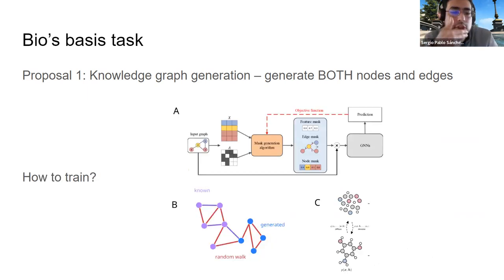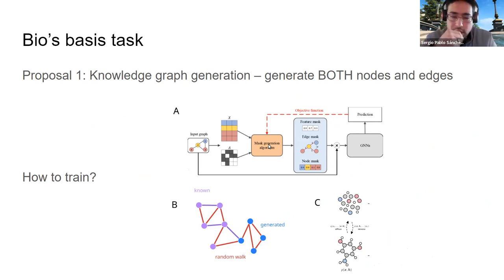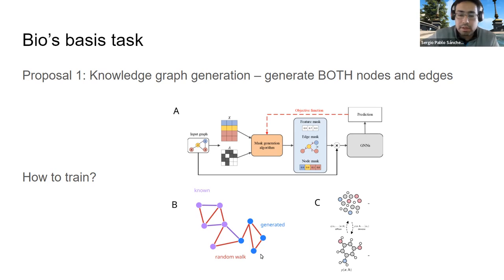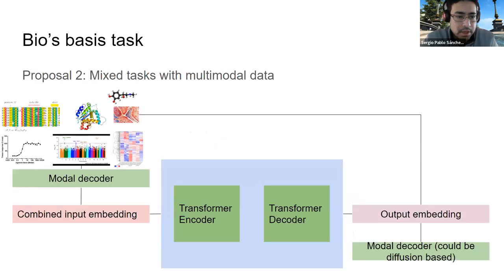How you'd train this depends on the data, but in general you could use a GNN and translate knowledge graph generation into masked node or edge prediction. Alternatively, you could do random walks by traversing all edges to produce sequences and train a sequence model on those. Or you could use tree parsers, as people have done for generating graphs for small molecules.